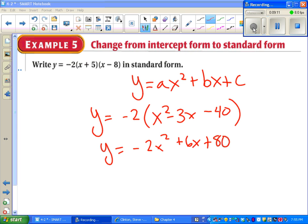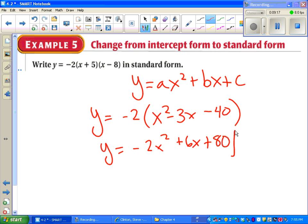If you notice, I waited until the end to distribute the minus 2. I could have done it at the beginning. I could put the negative 2 inside either one of those parentheses, but not both. No matter how you do it, if you do it correctly, you should get this at the end.